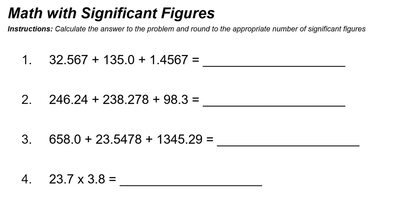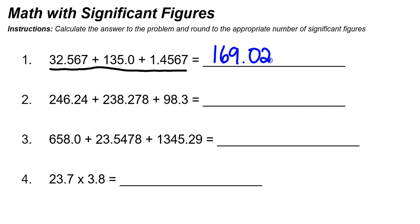So the first thing I'm going to do in number one is just go ahead and add up all these numbers: 32.567 plus 135.0 plus 1.4567. I'm going to go ahead and do that to get an answer. So 32.567 plus 135 plus 1.4567, and I got 169.0237. And now I need to round my answer to the appropriate number of significant figures.